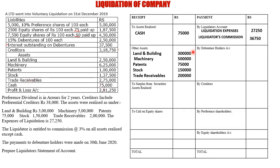Now we total the receipt side. The total of other assets is 12,25,000 plus cash of 75,000, giving total receipts of 13 lakhs. We have already spent the liquidation expense and commission, so quite an amount remains. Now let us start paying out all other liabilities.